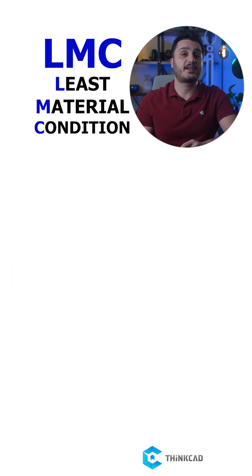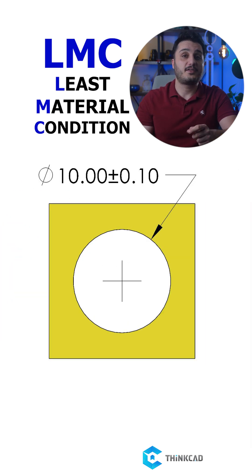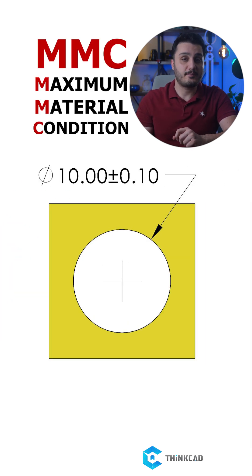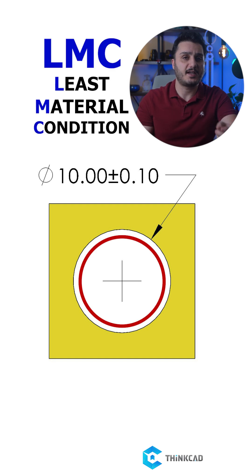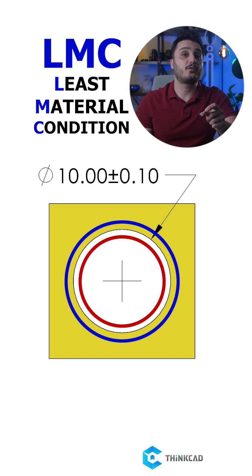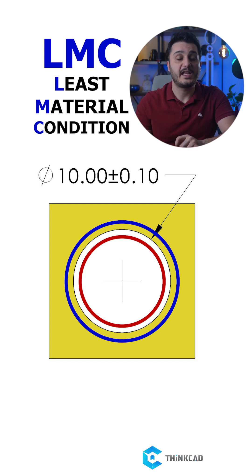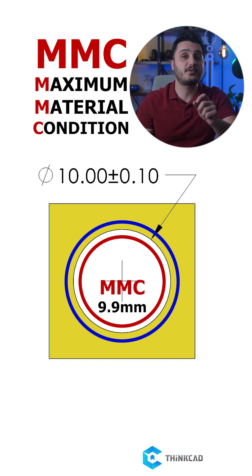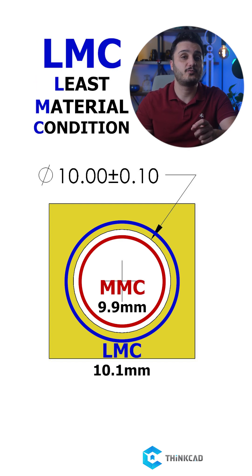Now for an internal feature like our hole here, things are opposite of the pin. MMC is its smallest size and LMC is its largest size. So for a 10mm hole plus and minus 0.1mm, MMC is 9.9mm and LMC is 10.1mm.